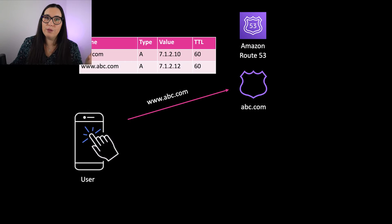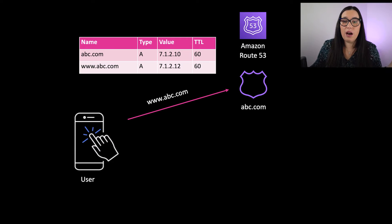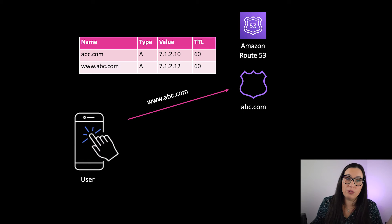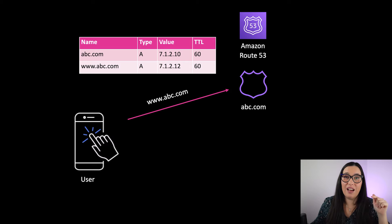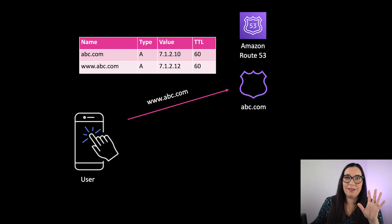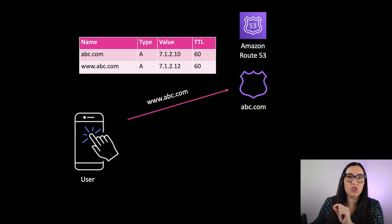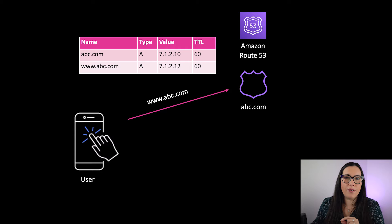Now let's look at hosted zones from the perspective of Route 53 as our authoritative server. The user wants to connect to www.avc.com. Route 53 logs into the hosted zone defined for that domain and finds a table that says: when there is no www, go to the .10 IP address; when there is www, go to the .12 IP address.